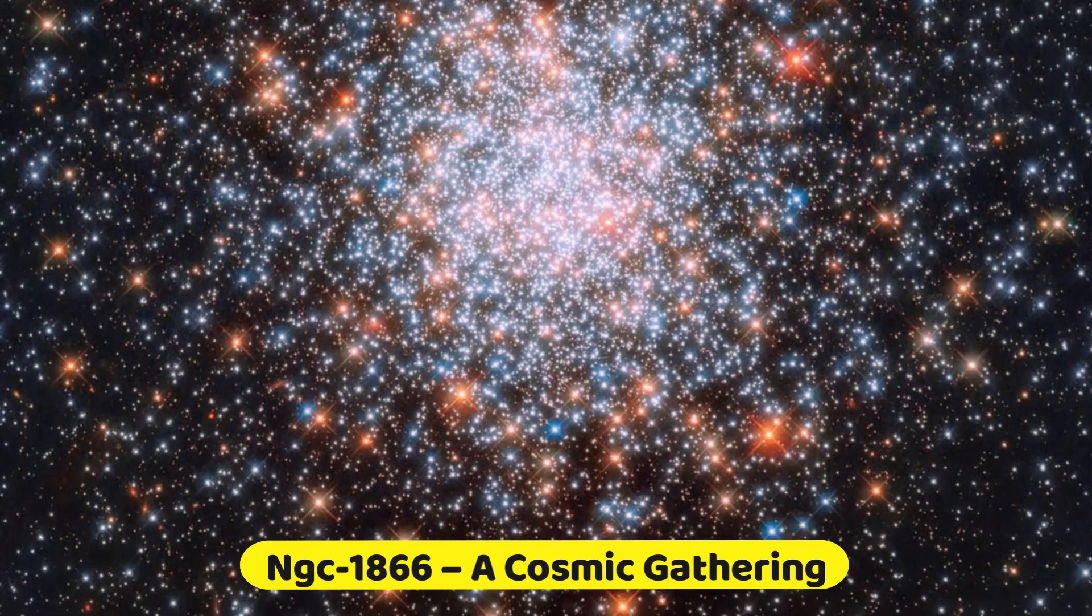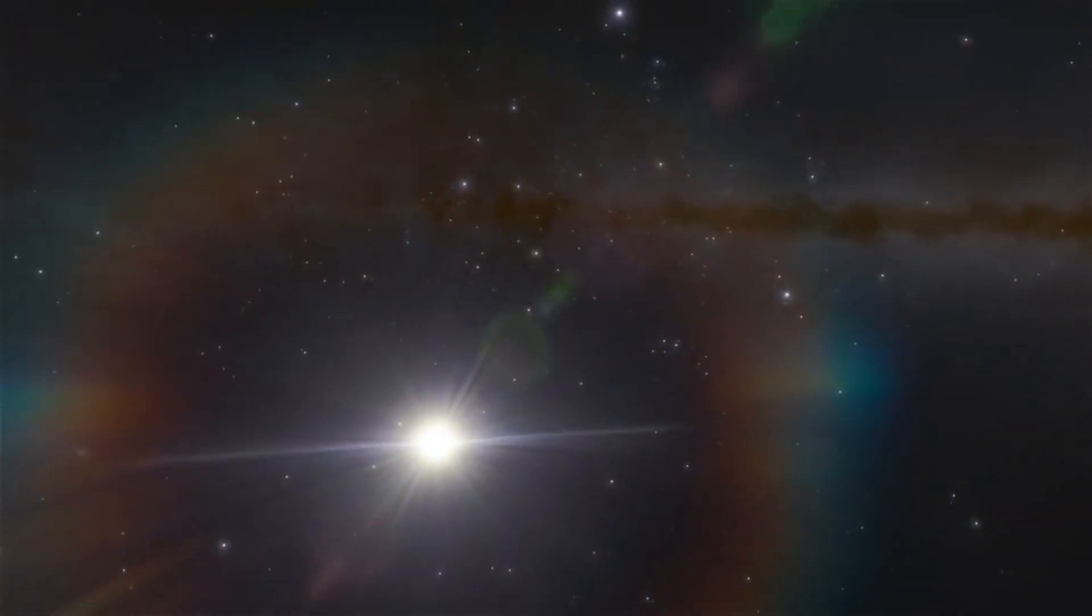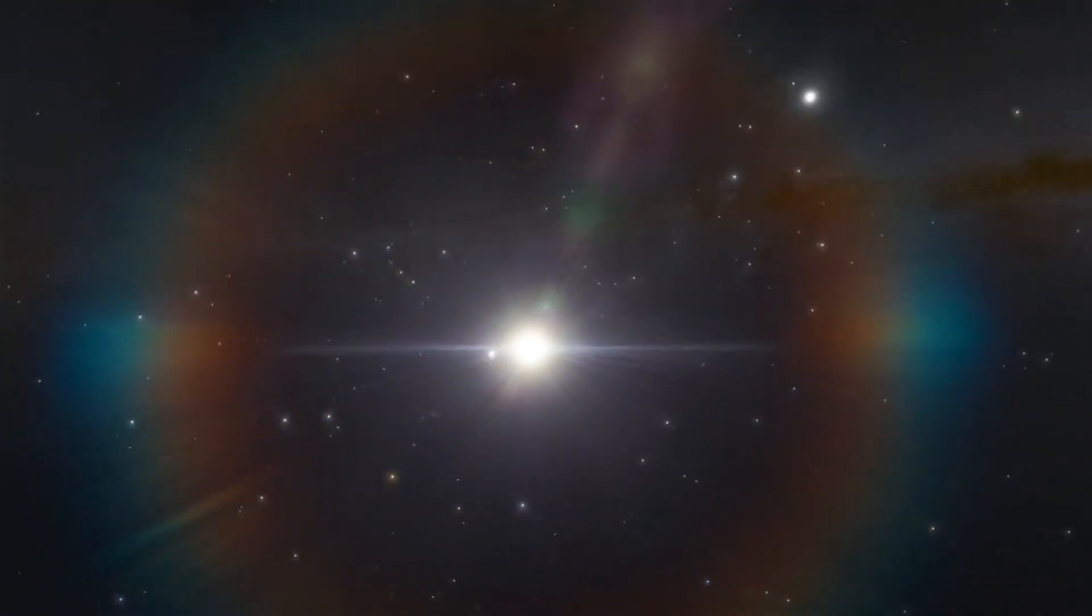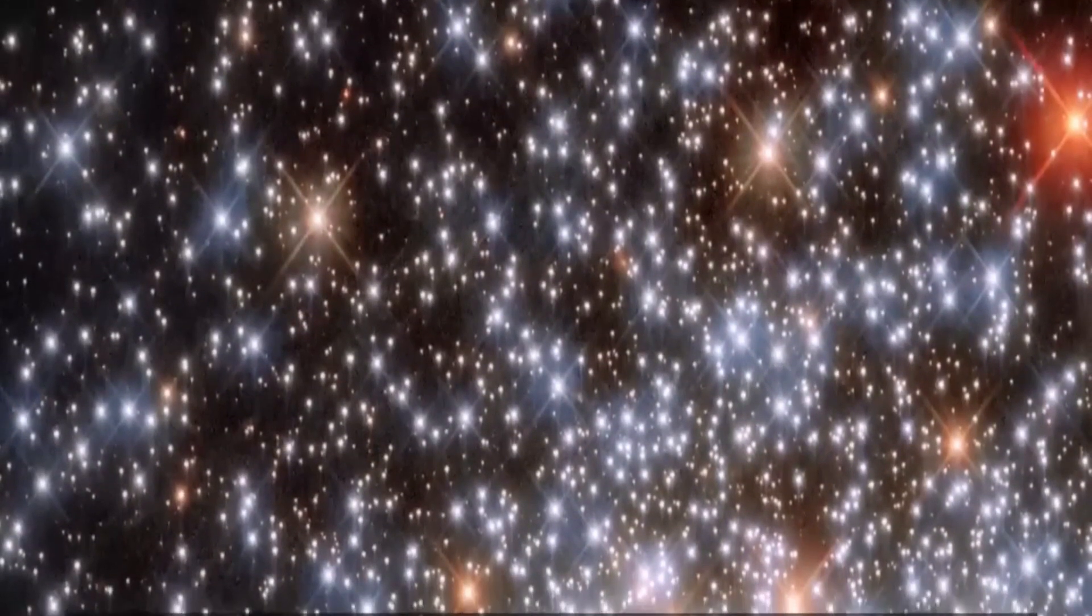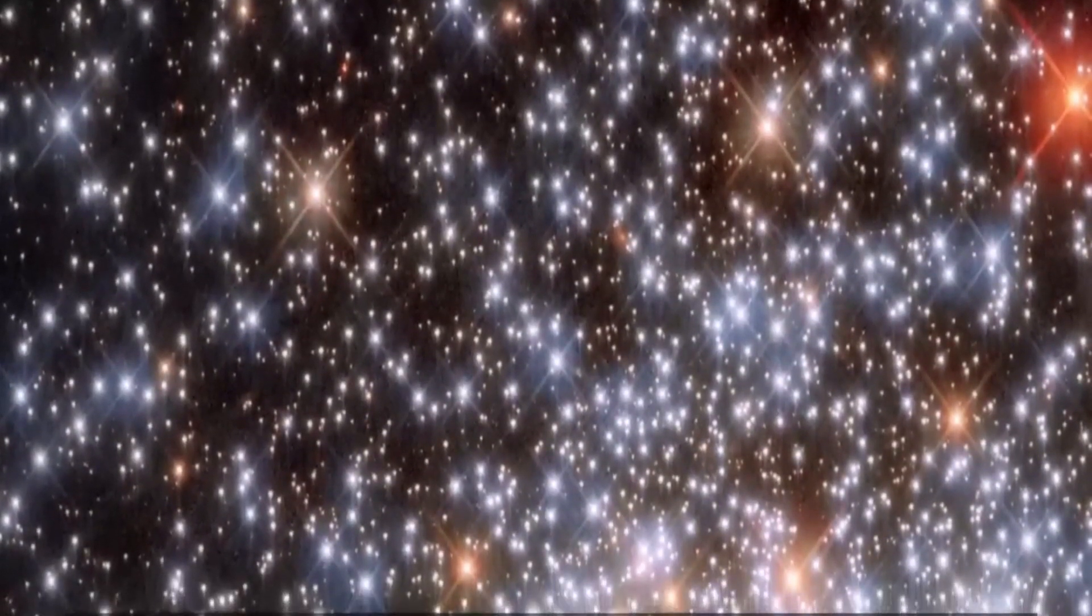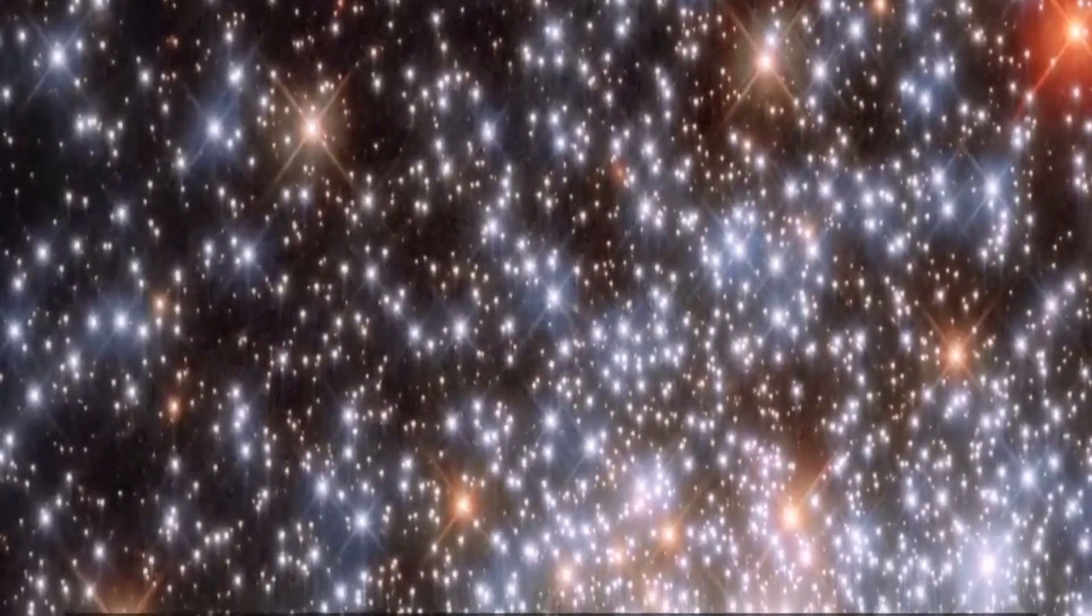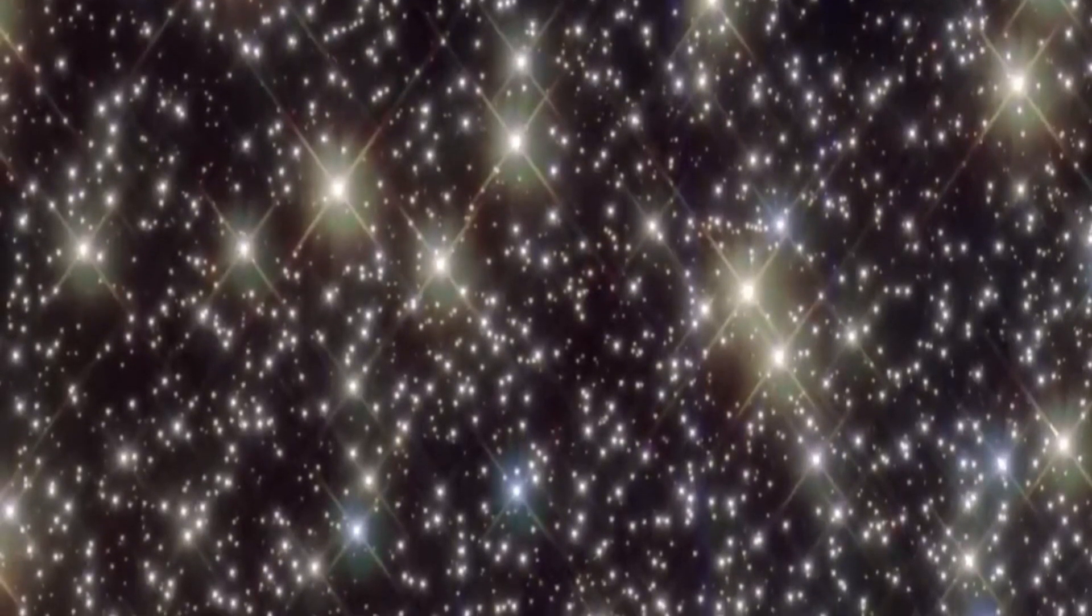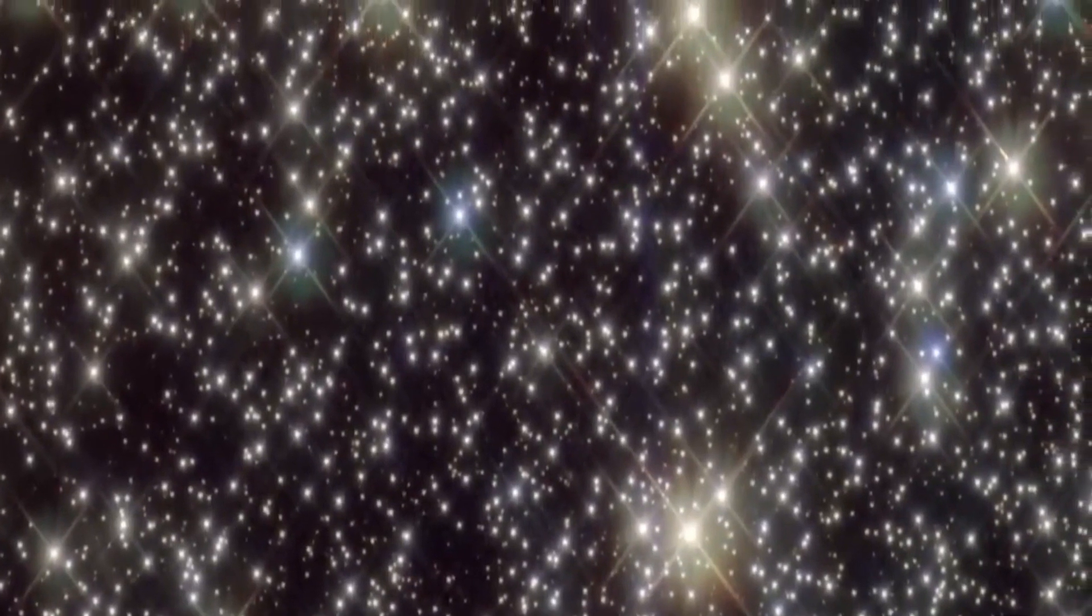Number 3. NGC-1866. A cosmic gathering. Imagine the universe throwing its very own celestial soirée, where thousands of stars come together to perform an enchanting cosmic dance. Our spotlight is on NGC-1866. A captivating sight nestled at the fringes of the large Magellanic Cloud. A cozy galactic neighbor to our Milky Way. Back in 1826, the brilliant astronomer James Dunlop unveiled this celestial gem and promptly enshrined it in his celestial repertoire.